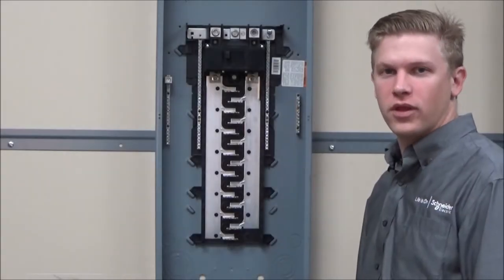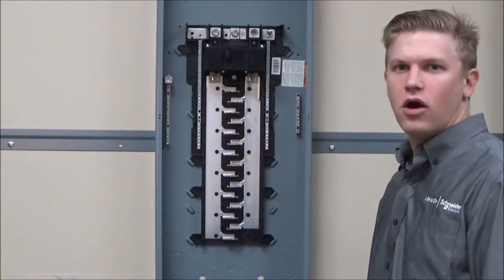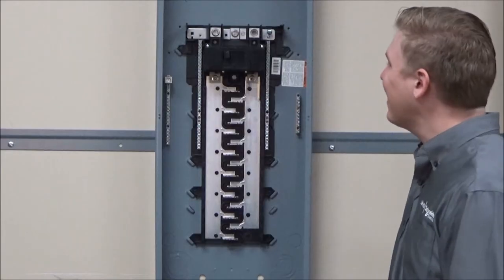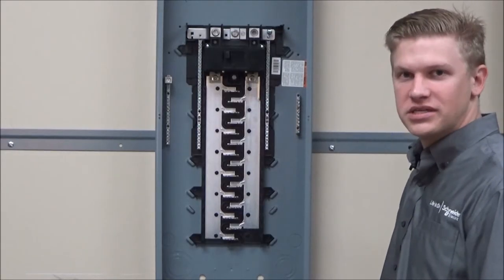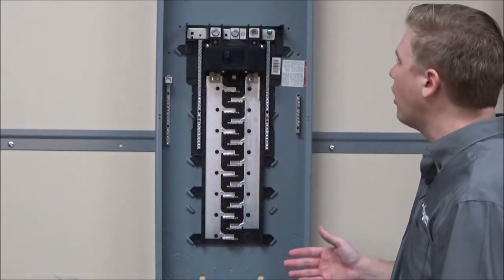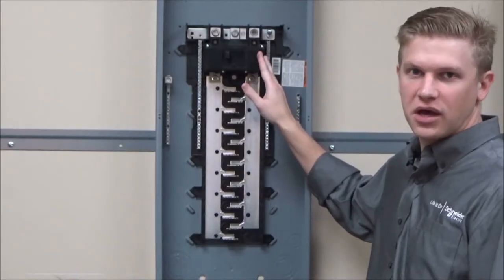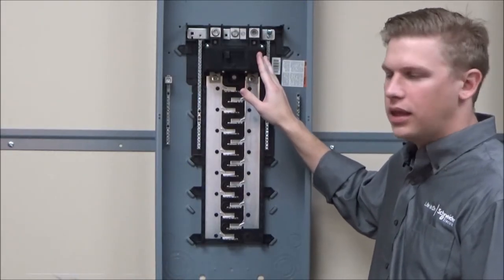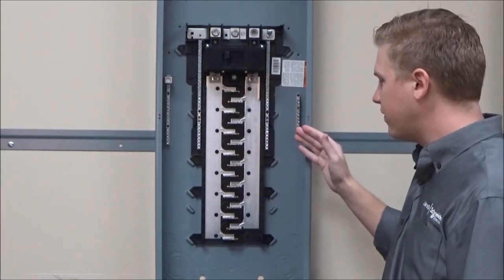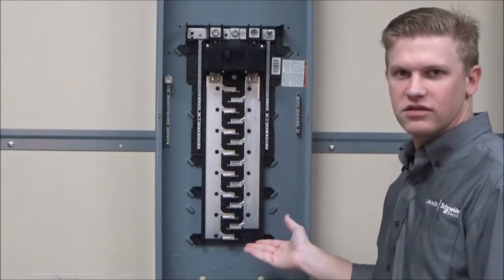In some homeline load centers not all of the spots are tandemized. In that case the spots that will be tandemized will be located on the opposite side of the main breaker, so those will be the spots that you will want to check. In this setup that would be the bottom spots of the load center.